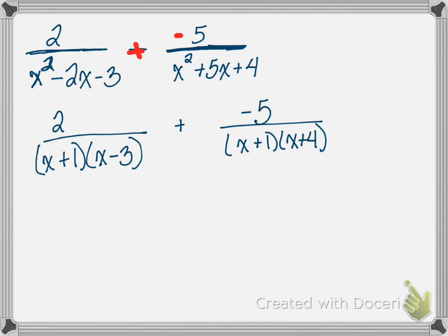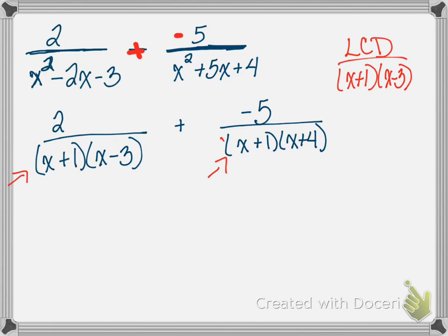Now I find the LCD. Starting with the first denominator: x plus 1 and x minus 3. Checking the second denominator: x plus 1 is already there, but x plus 4 is not, so I add it. My LCD is x plus 1 times x minus 3 times x plus 4. All factors from both denominators are accounted for.